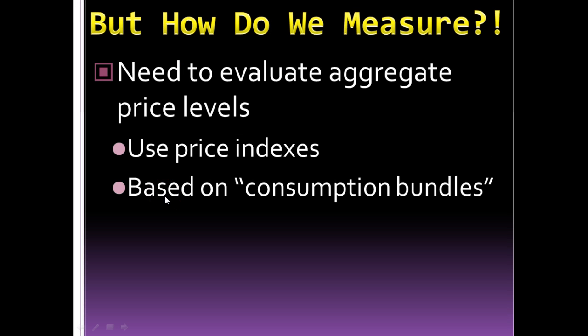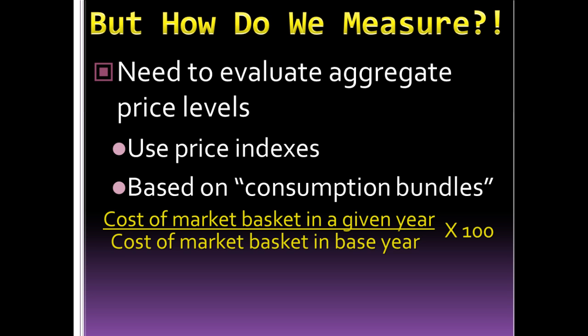So how do we measure inflation? We measure it by using a price index — a measure that helps us aggregate all of the different prices, incorporating the idea that some prices go up and some go down, but on average this is where prices are going. In order to create a price index, we use what are known as consumption bundles, or market baskets. We take the value of the market basket in a base year, compare it to the value of the same market basket in our given year, and multiply by 100, and that gives us an index number. We can then use different index numbers from different years to calculate the change in price — either inflation, which is the rise in prices, or deflation, which is the decrease in overall prices.